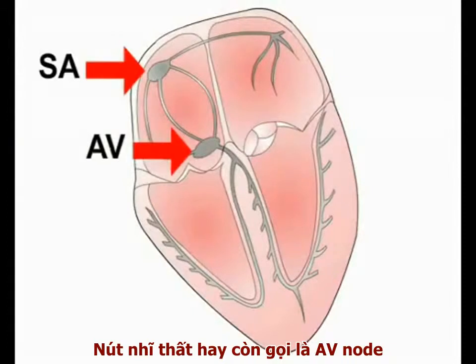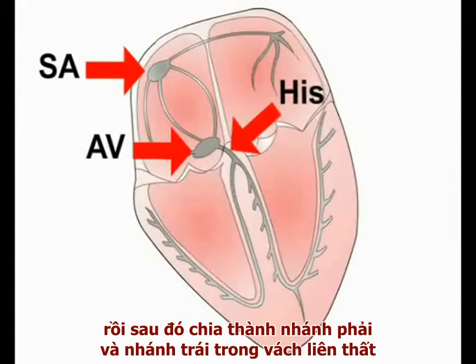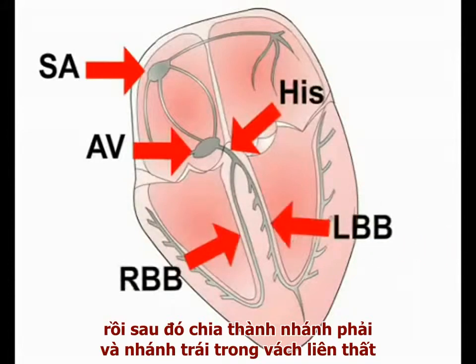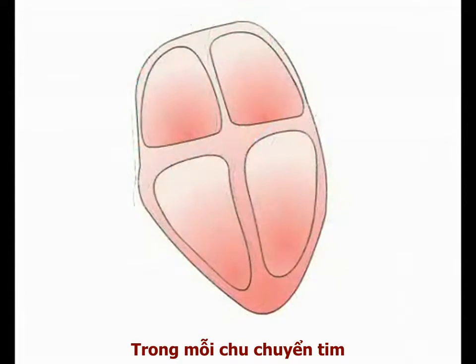And the atrioventricular, or AV, node, leading into the bundle of His, which then divides into the right and left bundle branches in the interventricular septum.